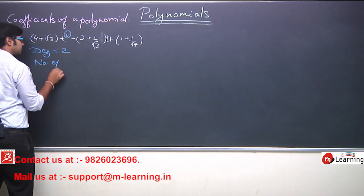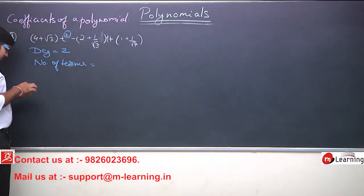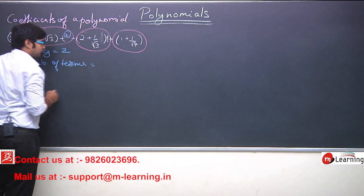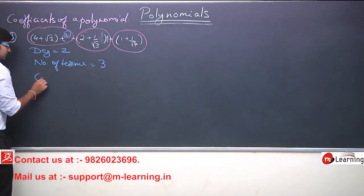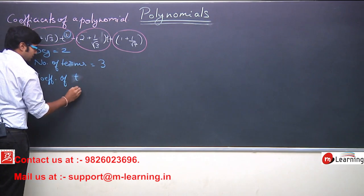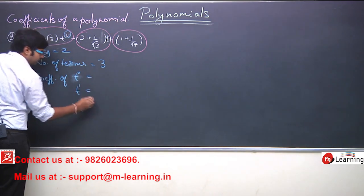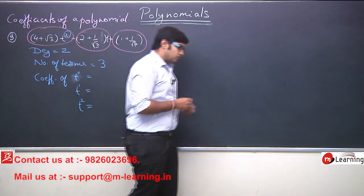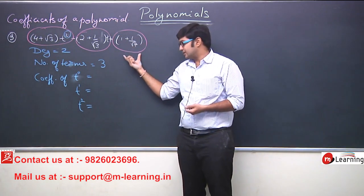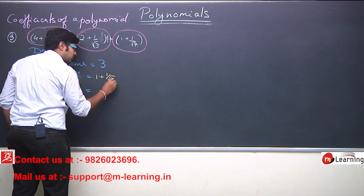Number of terms कितने हैं? इस expression में number of terms हमें कितने दिखाई दे रहे हैं? This is the first term, this is the second term, this is the third term. So, number of terms कितने हैं? 3. Now, what is the coefficient of T⁰, T¹, and T²? Clearly T⁰ is this expression. So, इसकी coefficient है: 1 + 1/√7. So, the coefficient of T⁰ is (1 + 1/√7).